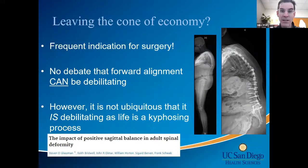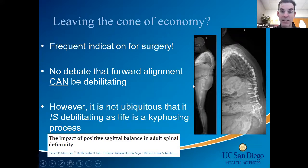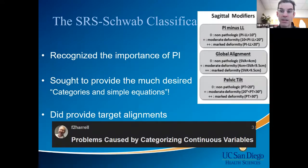Leaving the cone of economy is a frequent indication for surgery. In forward alignment it can be debilitating, but it is not ubiquitous that it is debilitating. What is ubiquitous is that life is a kyphosing process. Here are images from our asymptomatic EOS cohort — ODI less than 20, no complaints, no prior surgeries — versus the person who is miserable because they are fixed. You cannot conflate the two different sagittal plane alignments.